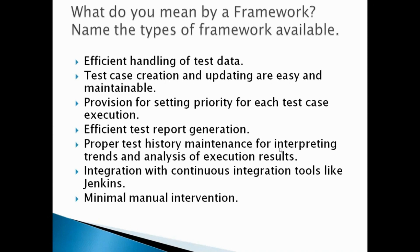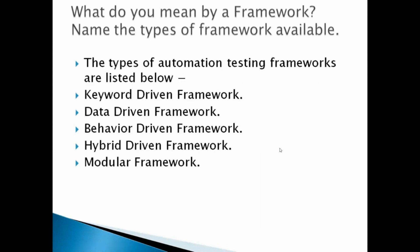A good framework also includes efficient test report generation, proper test history maintenance, trend analysis for execution results, integration with continuous integration tools like Jenkins, and minimum manual intervention. The types of automation testing frameworks include keyword-driven, data-driven, behavior-driven, modular, and hybrid frameworks.